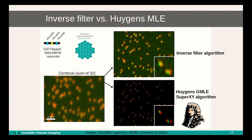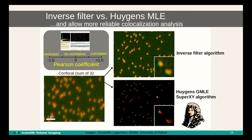This slide shows an ARRI scan dataset deconvolved with an inverse filter algorithm and compared with the Huygens GMLE approach. The objects are GataQuant nanorulers where the outer fluorophores are spaced 140 nanometers apart, with an extra fluorophore at a different wavelength exactly at the center. In the GMLE result, we can directly appreciate the resolution increase and significantly reduced background. This is in clear contrast with the inverse filter approach, where a lot of background remains and artifacts are visible in the background. The obtained resolution is obviously clearly worse compared to the MLE approach.